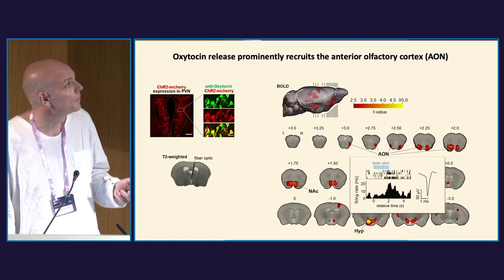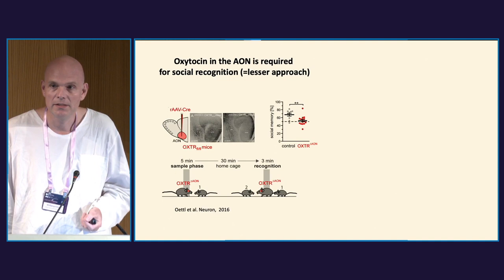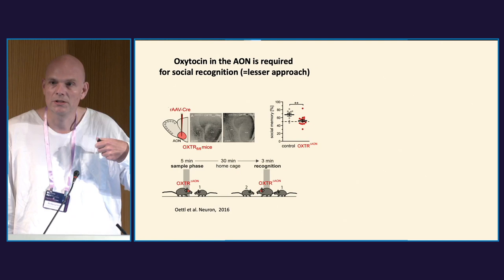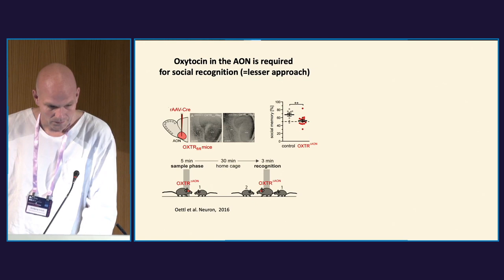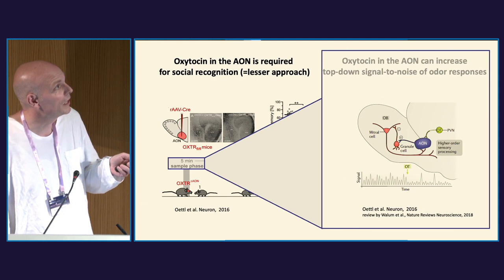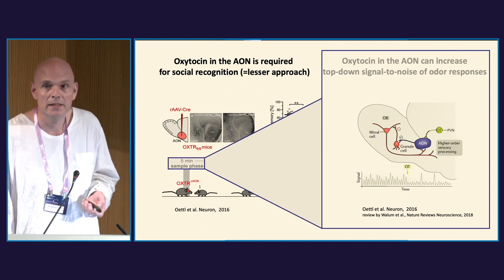Another thing we observed was that when we selectively knocked out oxytocin in this anterior olfactory cortex, these animals could not remember the other one at a behavioral level — they had no preference in the approach behavior. What we had done already in this paper was clarify how oxytocin modulates olfactory processing via top-down glutamatergic projections onto interneurons, modulating responses with an increase of signal-to-noise.